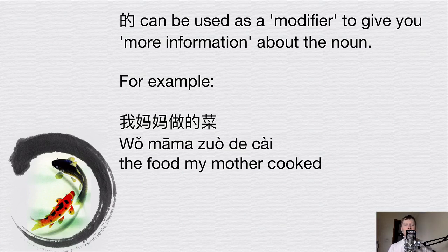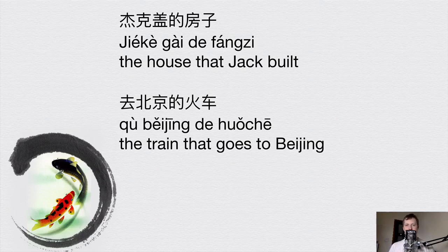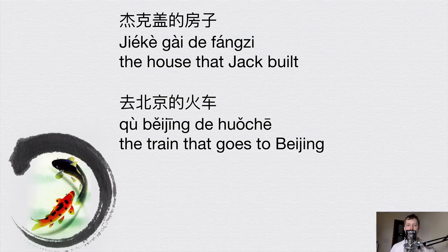的 can also be used as a modifier to give more information about a noun. For example, 我妈妈做的菜 means 'the food my mother cooked' — 菜 is 'food' or 'dishes,' the most important part, and 我妈妈做的 means 'my mother cooked.' More examples: 节颗盖的房子 means 'the house that Jack built' — 房子 is 'the house.' And 去北京的火车 means 'the train that goes to Beijing' — 火车 is 'train,' 去北京 means 'go to Beijing,' and 的 shows the relationship, with 去北京 being subordinate to 火车.